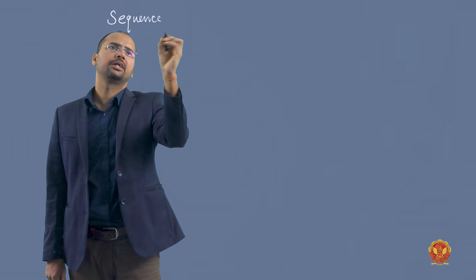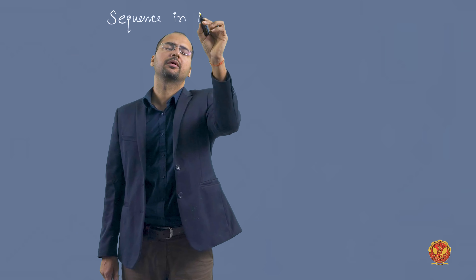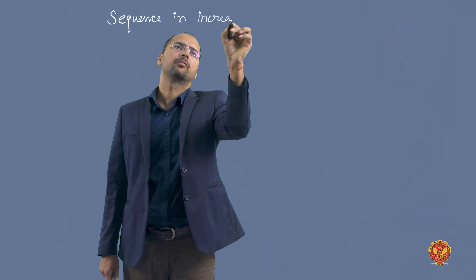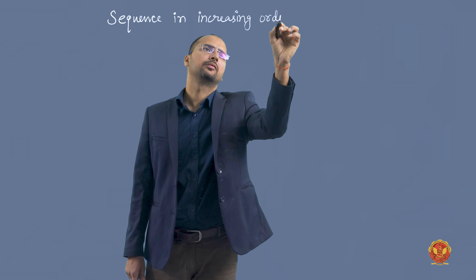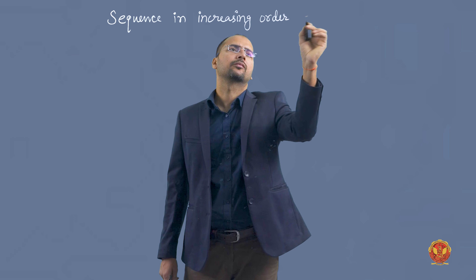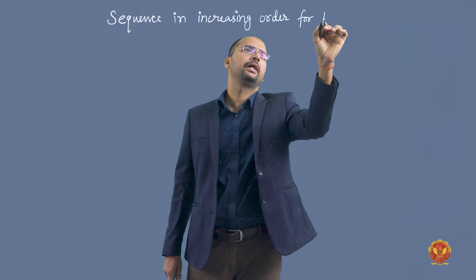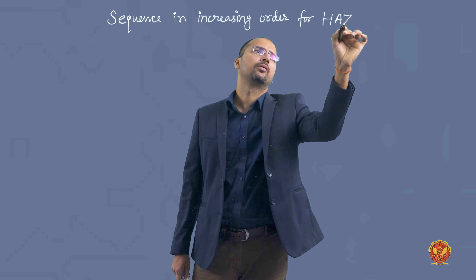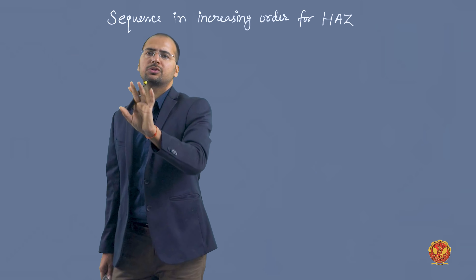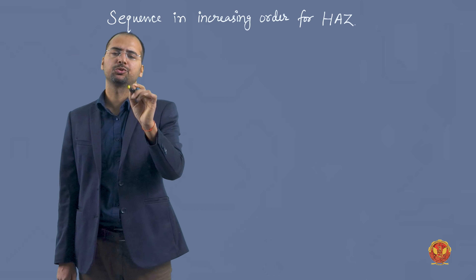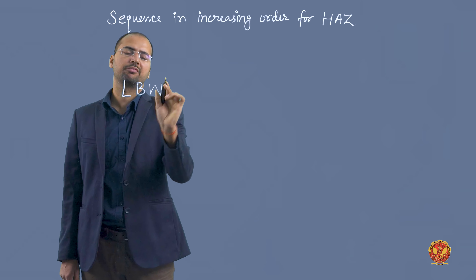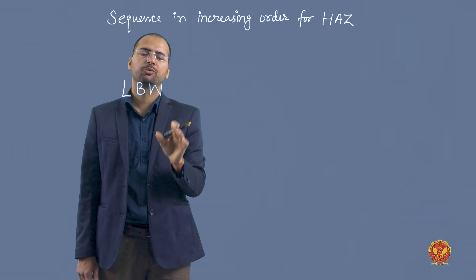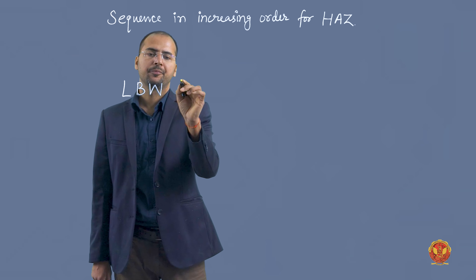Sequence in increasing order for heat affected zone — सबसे कम जो heat affected zone होगा वो laser beam welding के लिए होगा, क्योंकि laser beam welding में rate of heat input सबसे ज्यादा होता है।